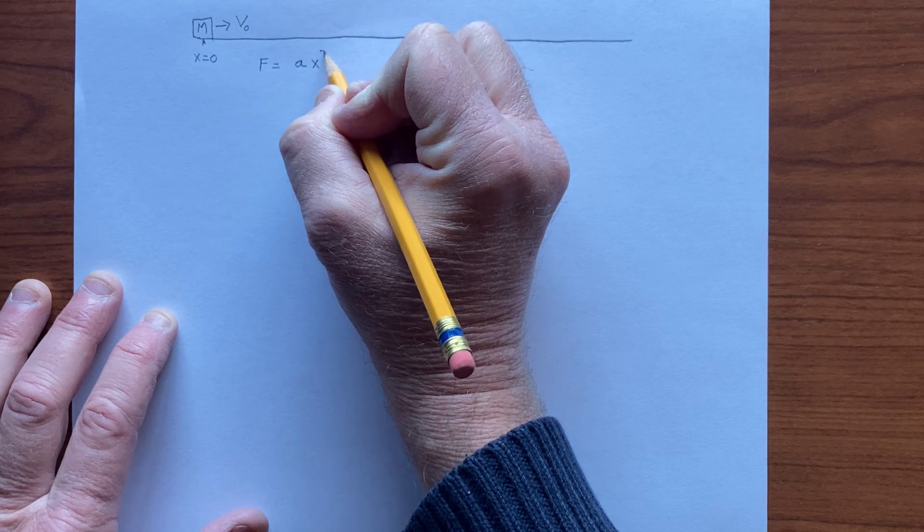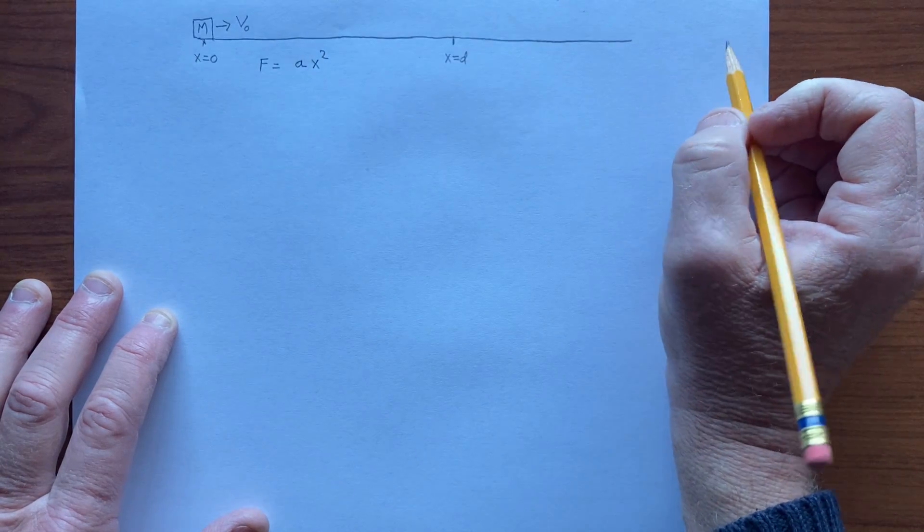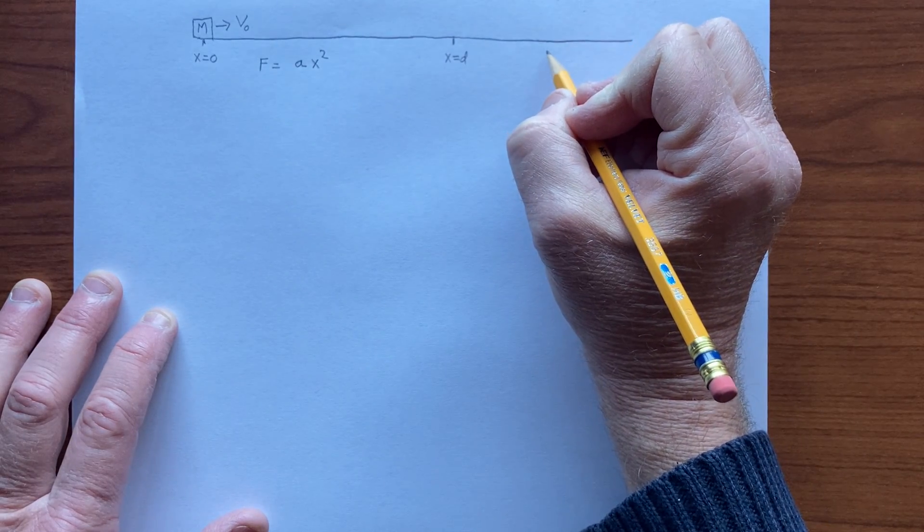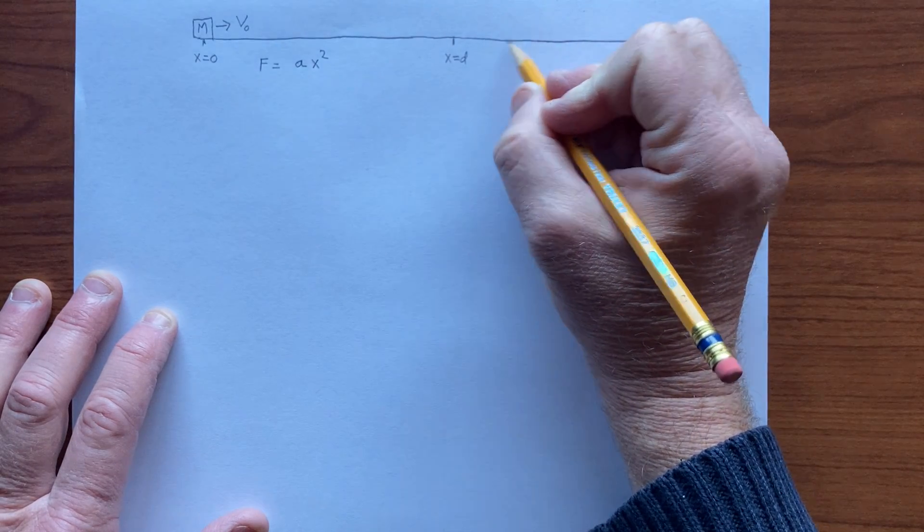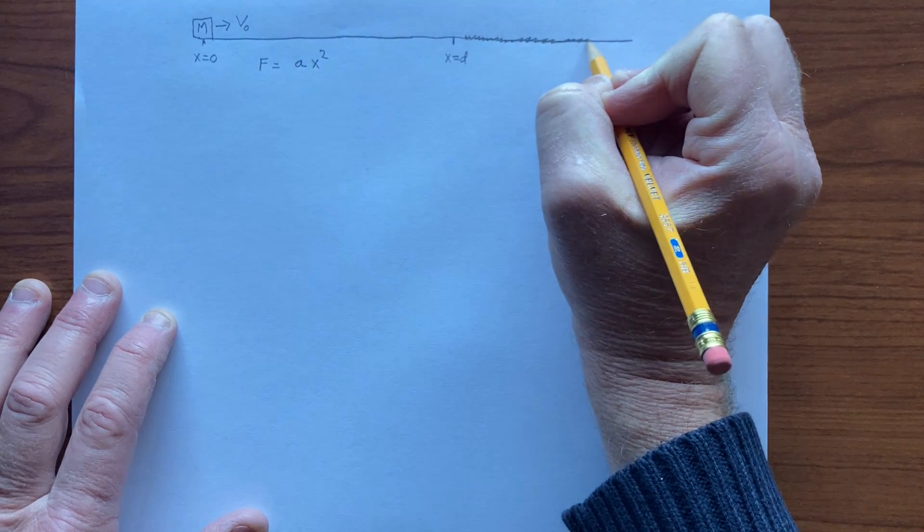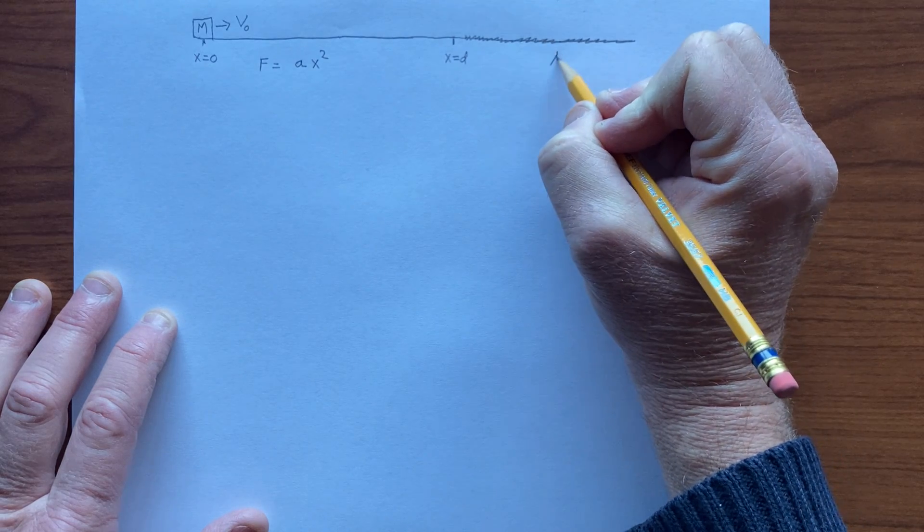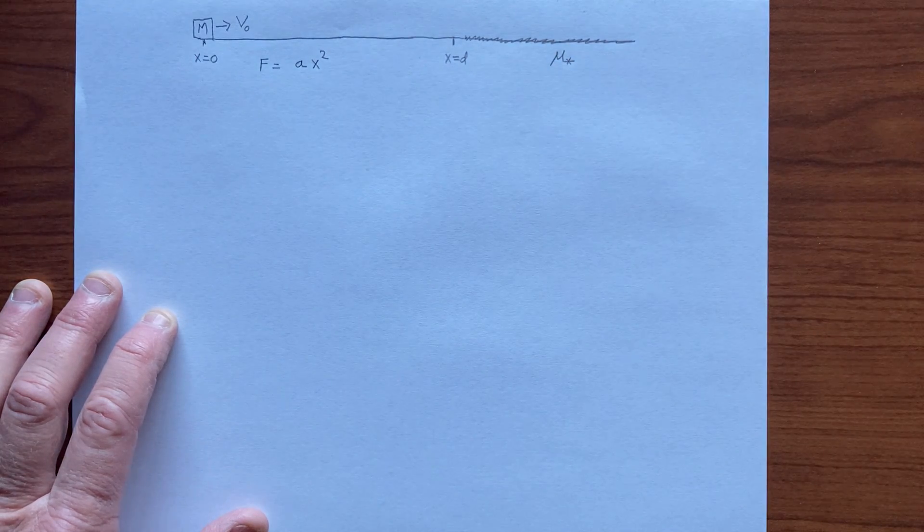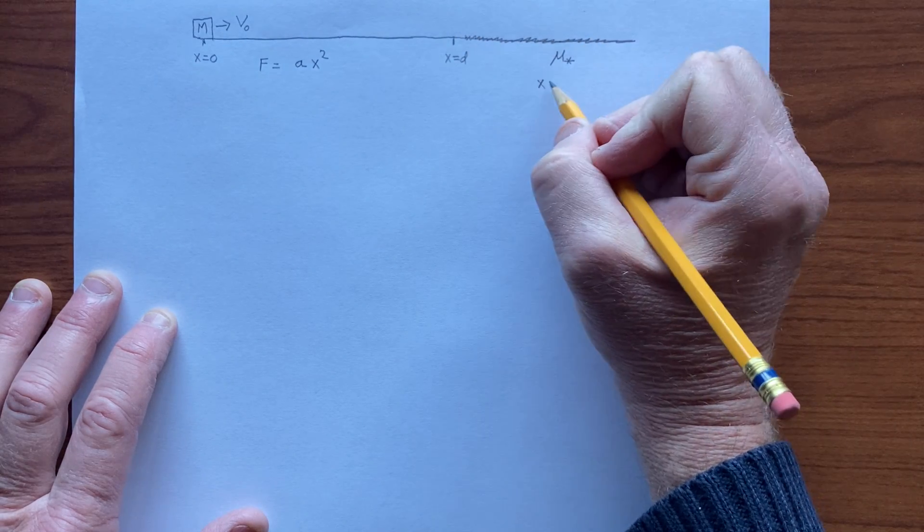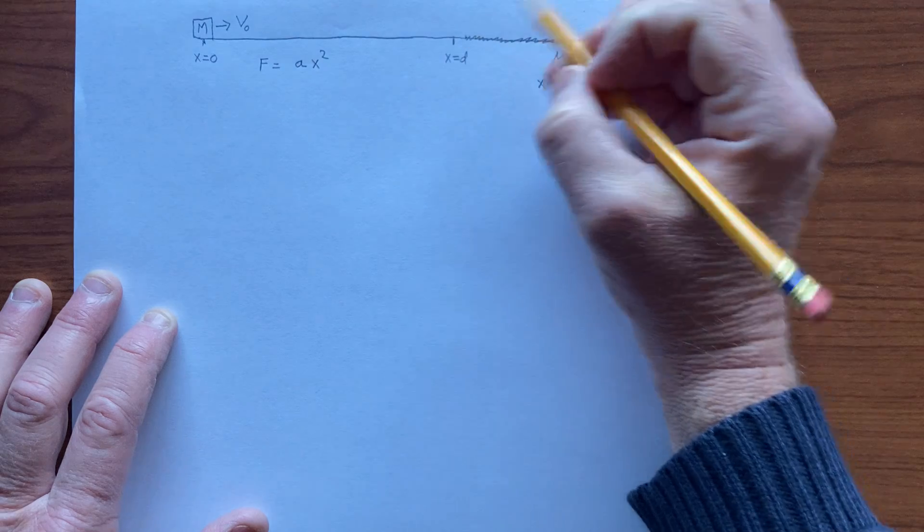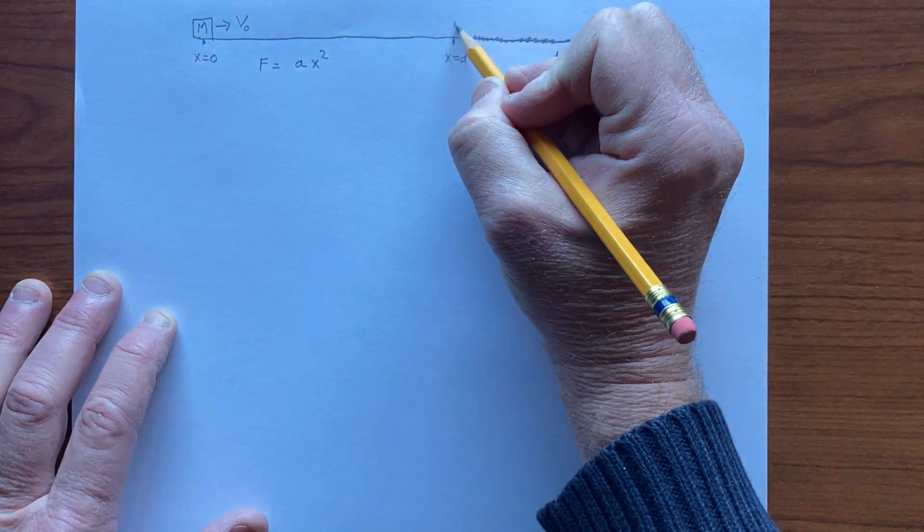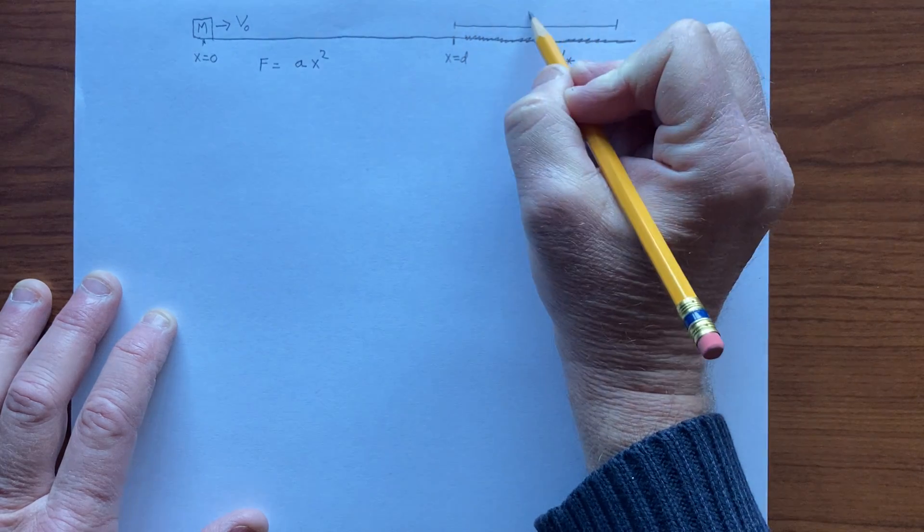And then here we have a surface with friction, a rough surface with coefficient of friction mu star. We want to know how far the object travels on the surface. So let's say x is the distance traveled along here.